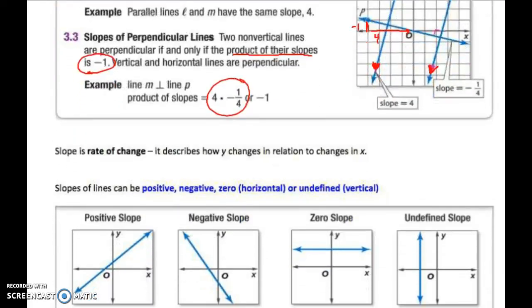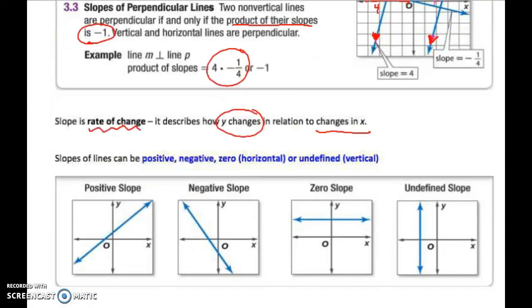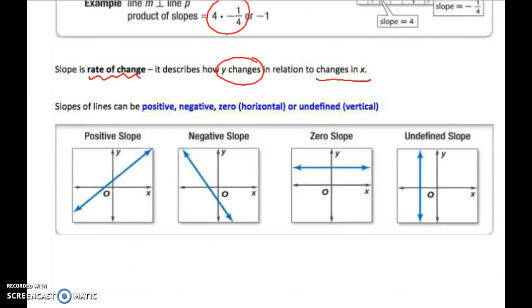We can also refer to slope as a rate of change, right? How Y changes in relation to how X changes. Your slopes can either be positive, negative, zero, or undefined.